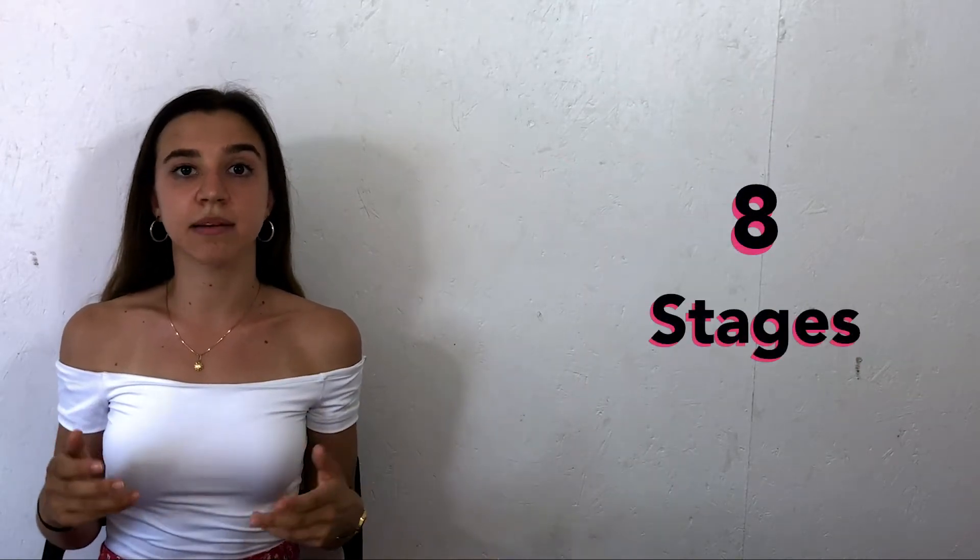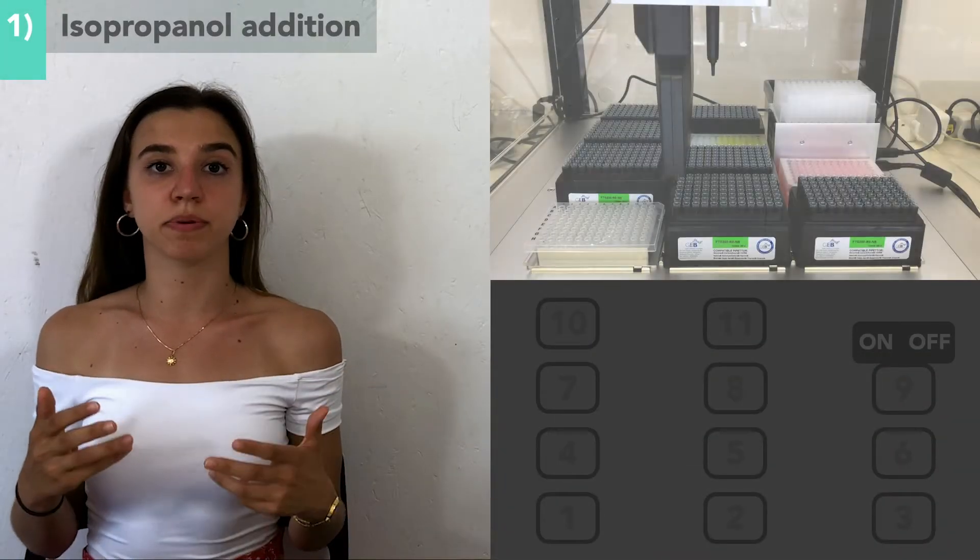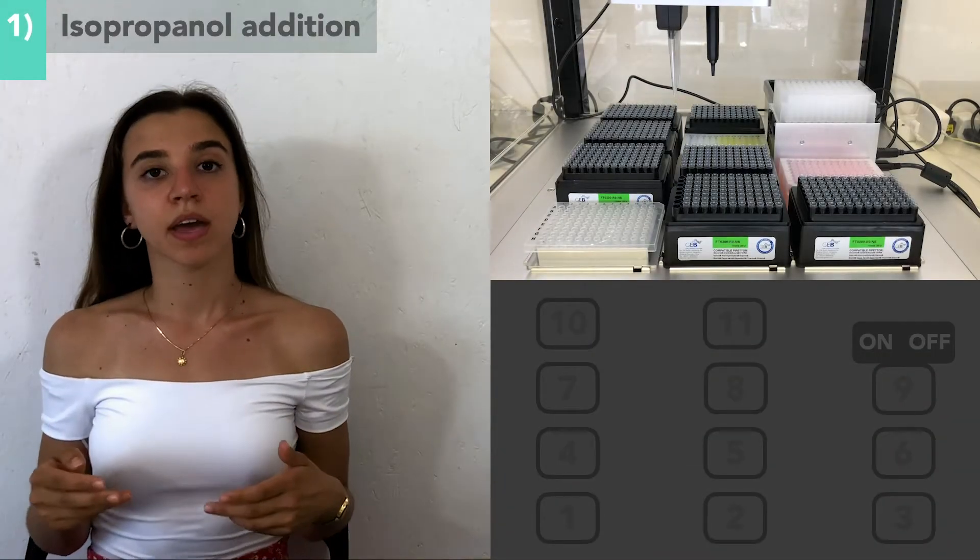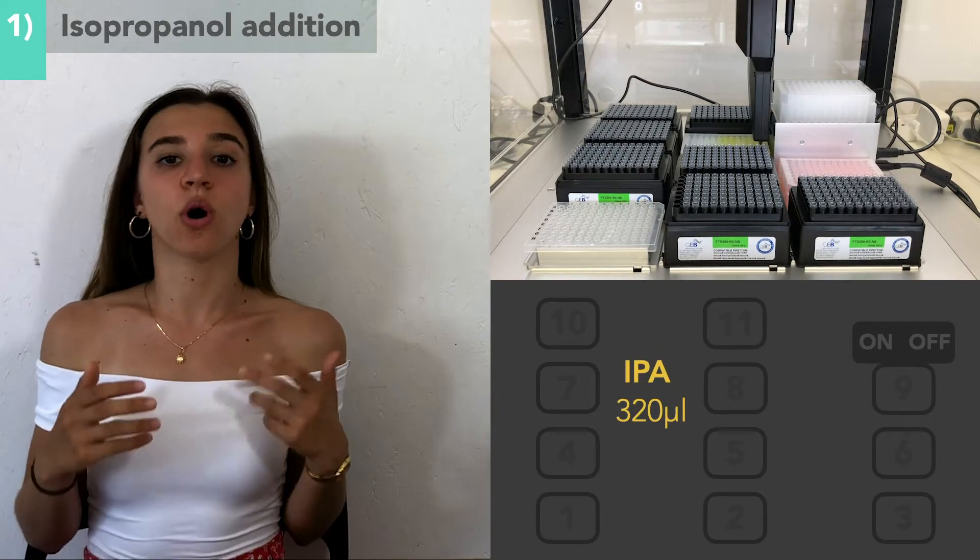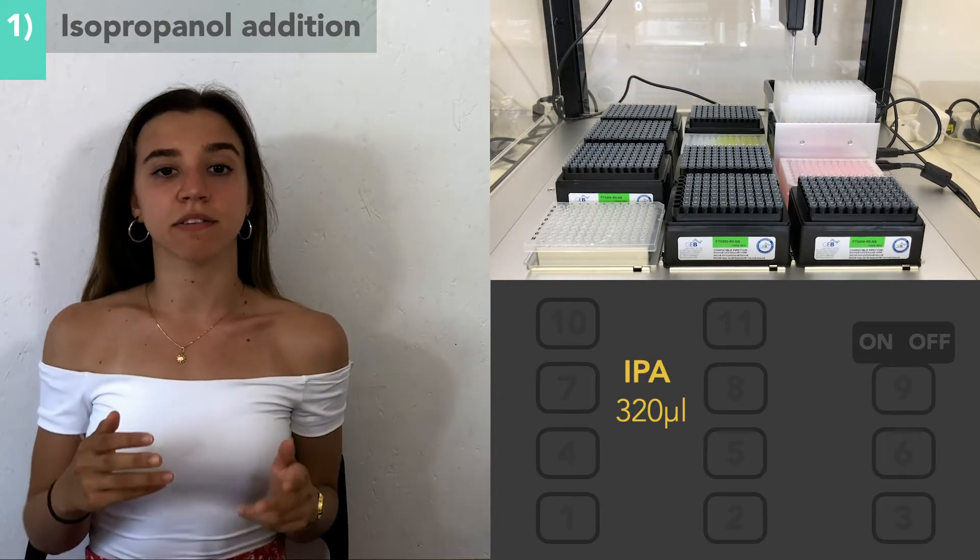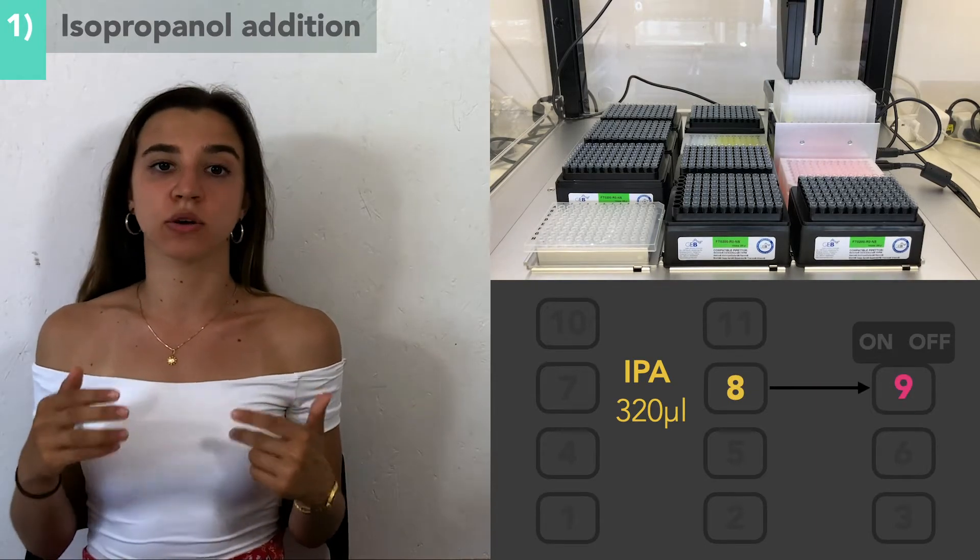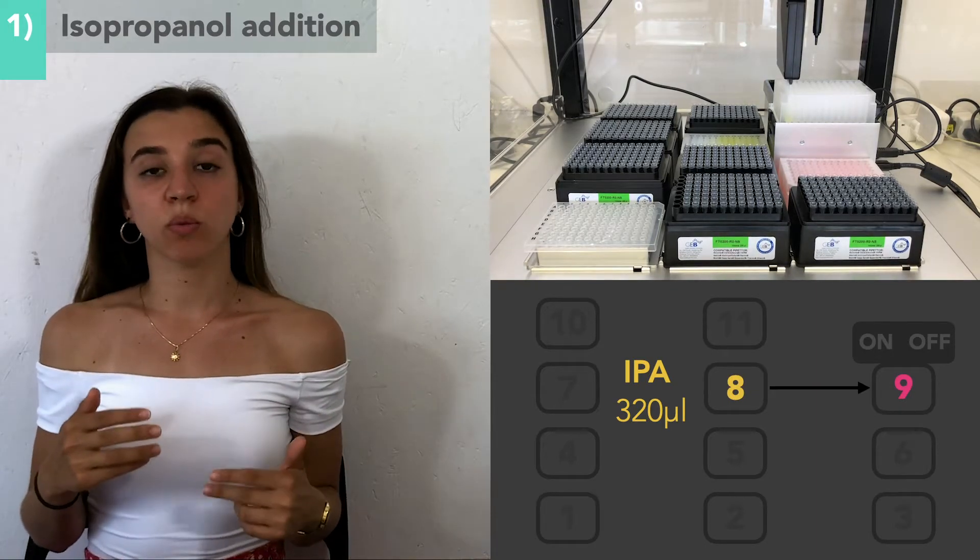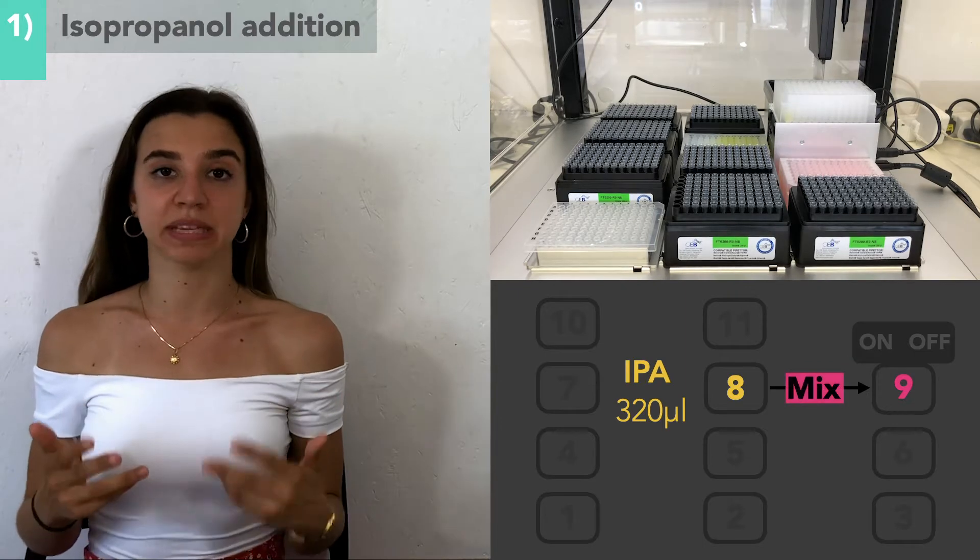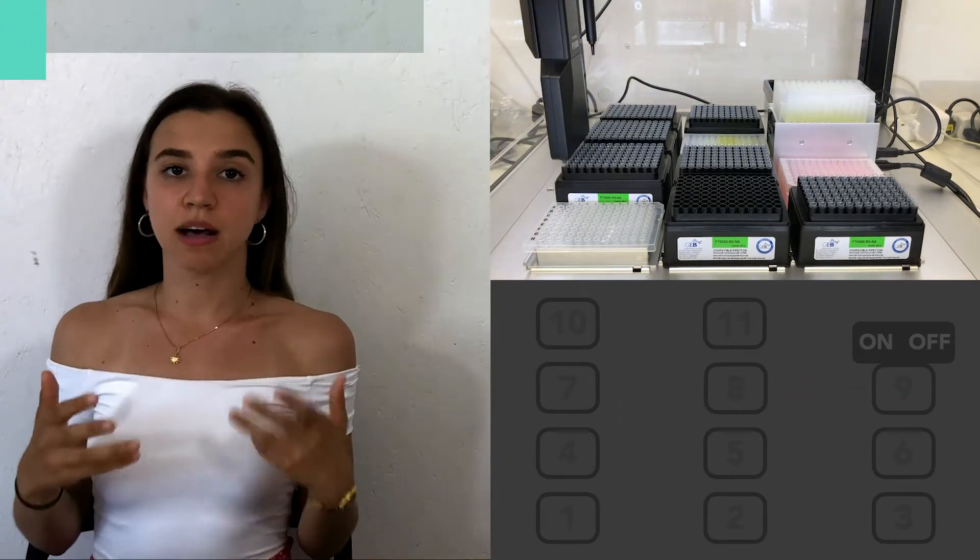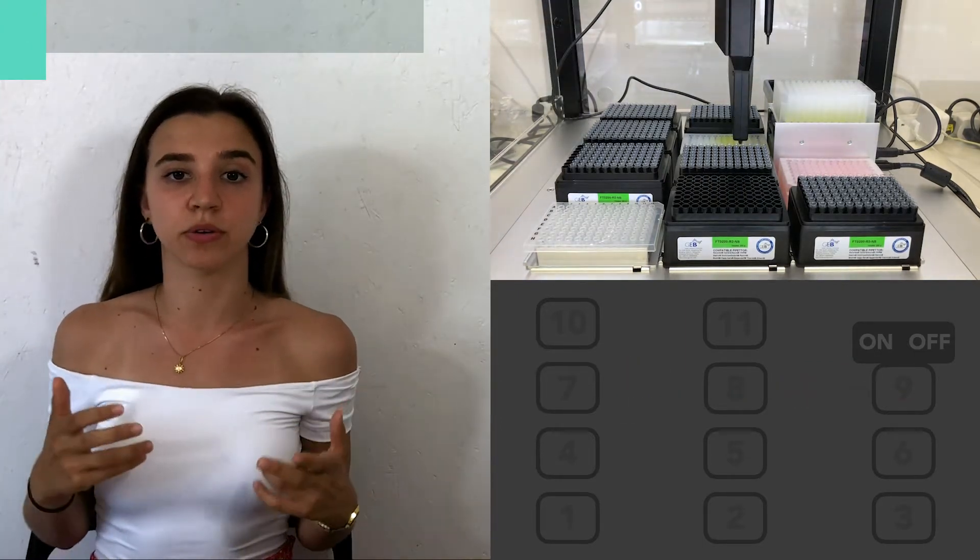This RNA extraction happens over eight stages undertaken by the OT2 robot. The first stage is the addition of isopropanol to the samples. 320 microliters of isopropanol will be taken from slot 8 and added to each sample well in slot 9. The sample will be pipetted up and down to mix properly.